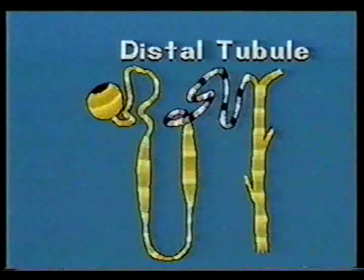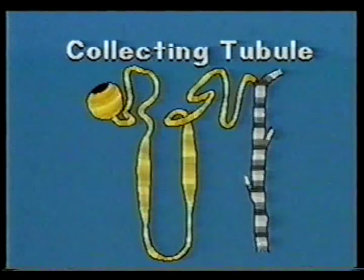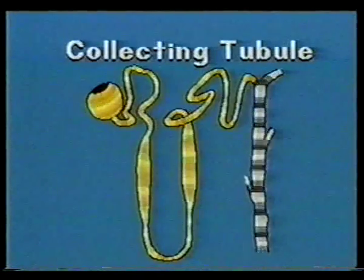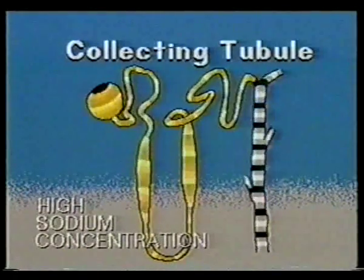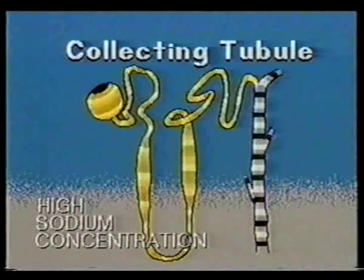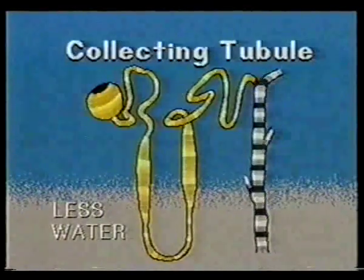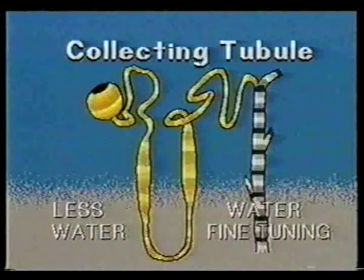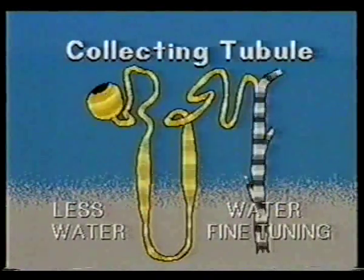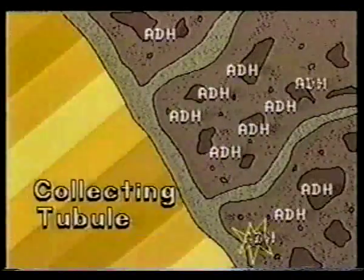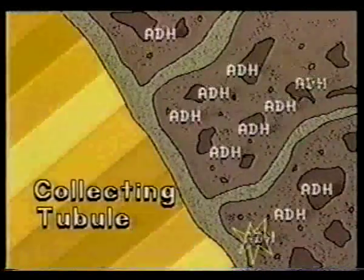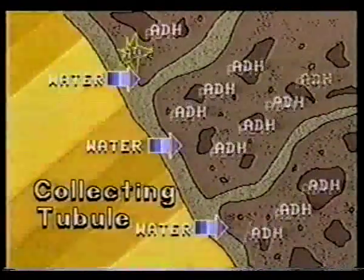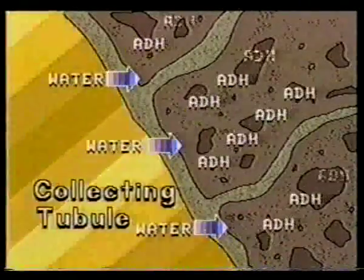Finally, the urine is carried from the distal tubule to the collecting tubule. This dips back into the medulla, where the high sodium concentration is maintained by the loop of Henle. Here, osmosis can take place, allowing the collecting tubules to fine-tune the water concentration in the blood. For example, the hormone ADH, or antidiuretic hormone, constantly signals the cell walls to remain permeable to water. Osmosis moves water out of the tubule, which concentrates the urine left behind.